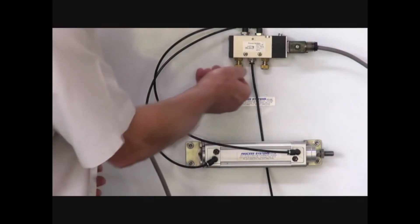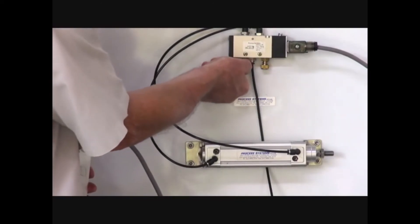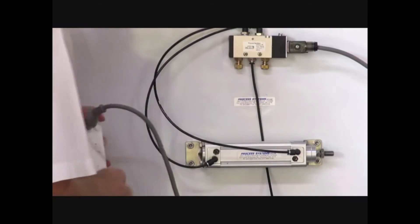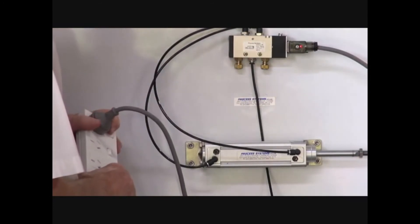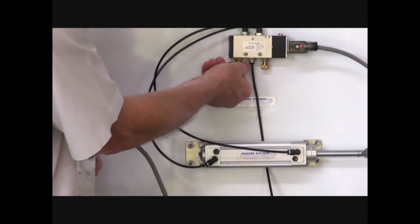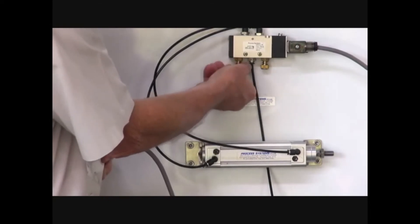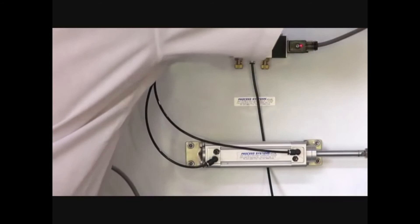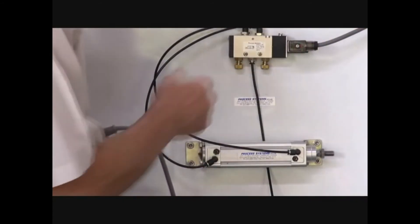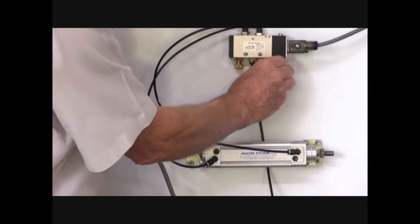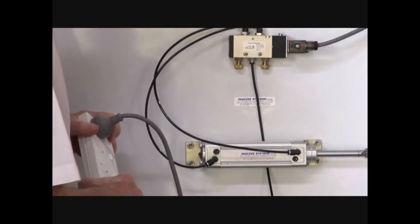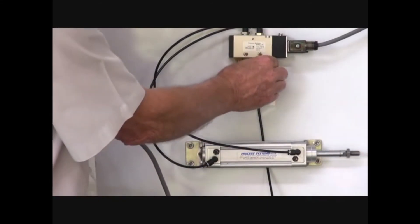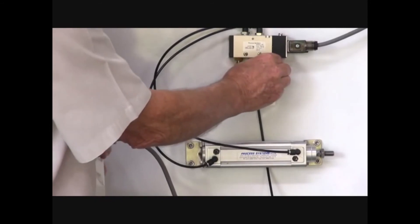And if we operate our flow control by winding that in, we can control the speed. And if we wind it back out again, it goes faster. It's controllable in both directions. Adjust that speed to suit yourself.